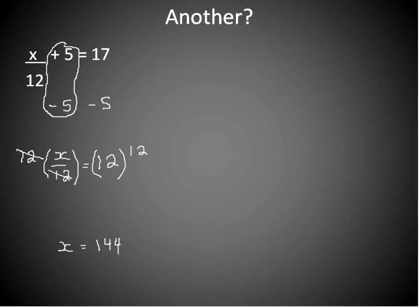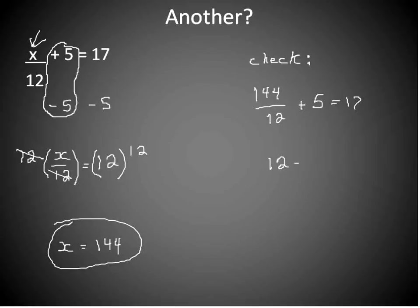The great thing about these types of questions is that you can check your work. So if we wanted to do a check over here, we could take the value x = 144 and substitute that into our original equation. So 144 will go in where we see an x right here. 144 divided by 12 is 12. 12 plus 5 is 17. And we have ourselves a final answer. We can check our work, which is really nice with transformations.